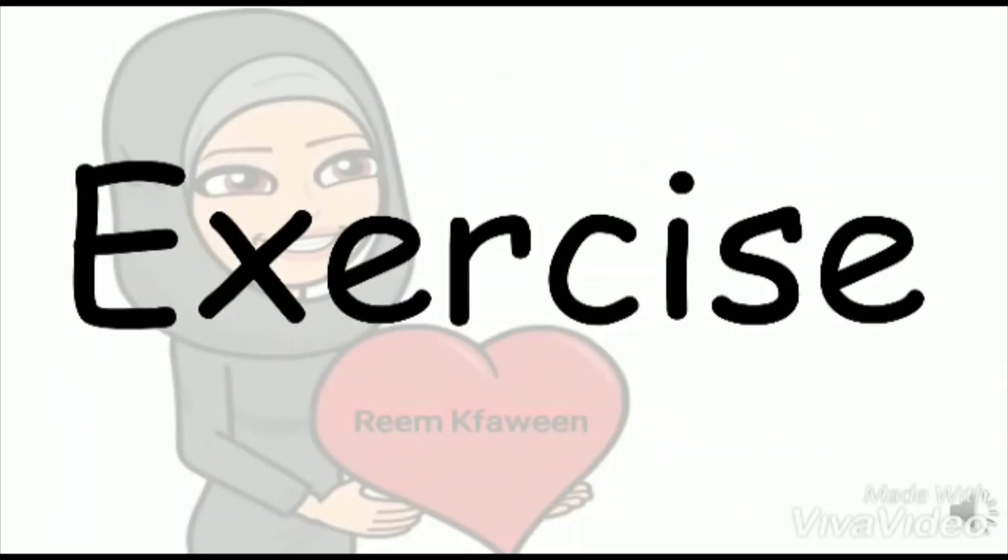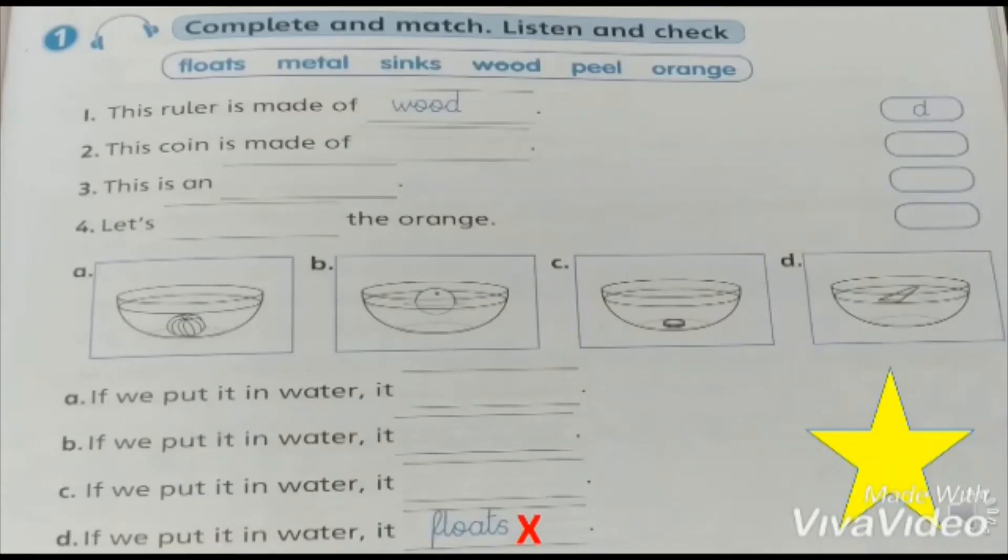Now, let's do exercise number one and two, page 57. Exercise number one. We're going first to choose the suitable word for each of the following sentences, and then we're going to match each sentence with its suitable picture. Finally, we're going to decide whether this object floats or sinks.